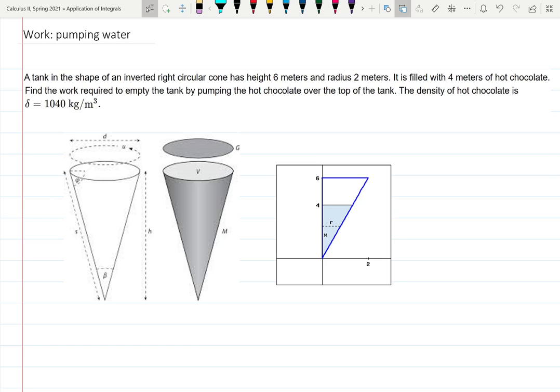This is a pumping water example, one of the typical work chapter problems. The tank is in the shape of an inverted right circular cone. Here's how it looks: the height of the cone is six meters, so if I draw it like this, this is going to be six meters, and the radius is two meters.